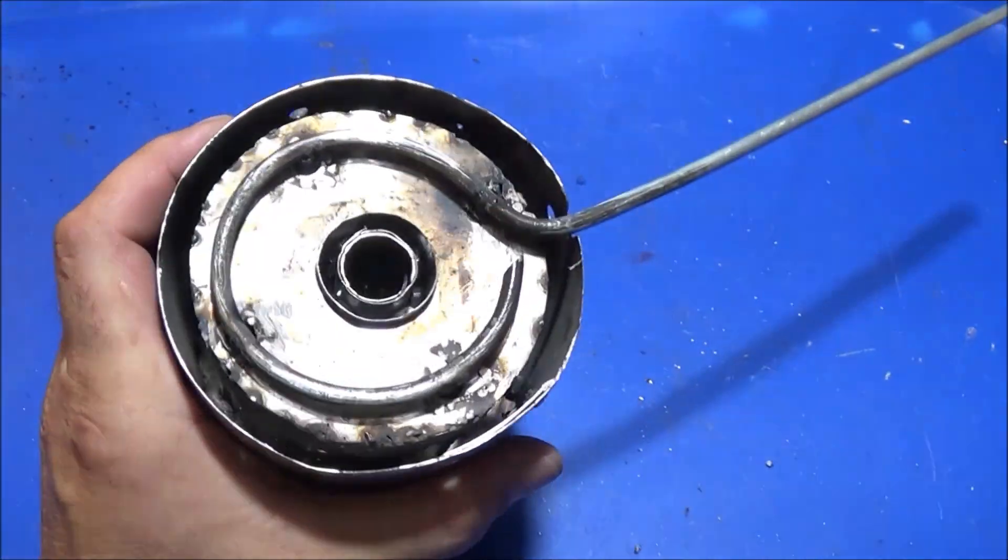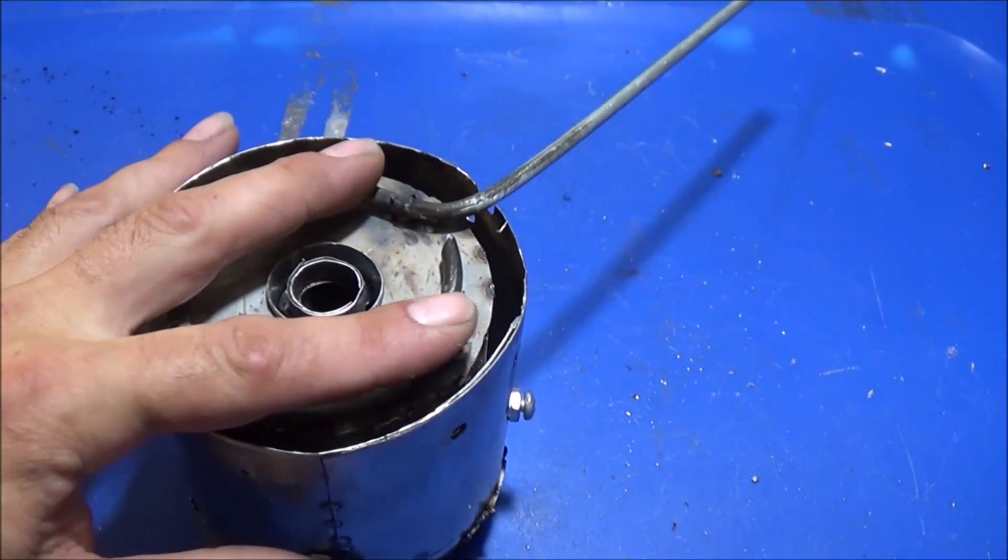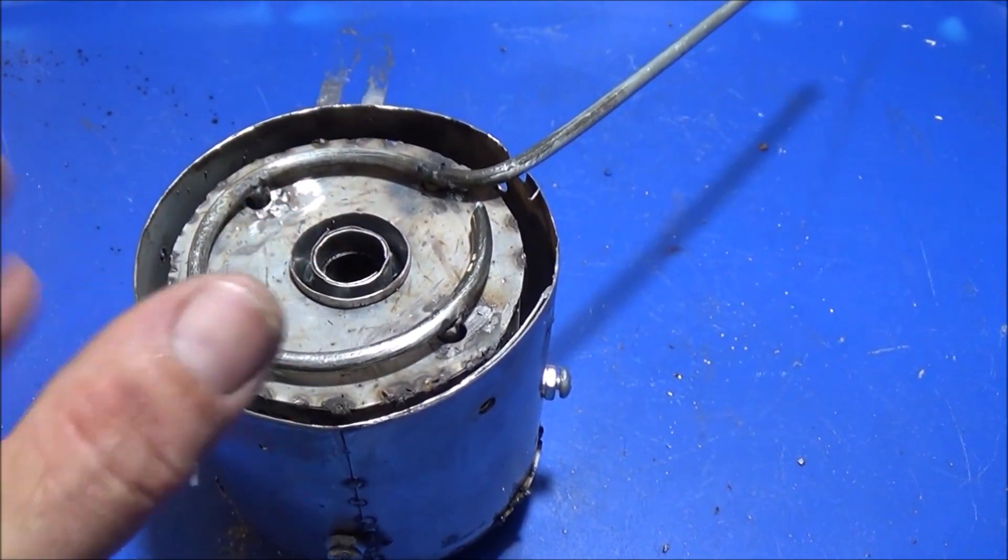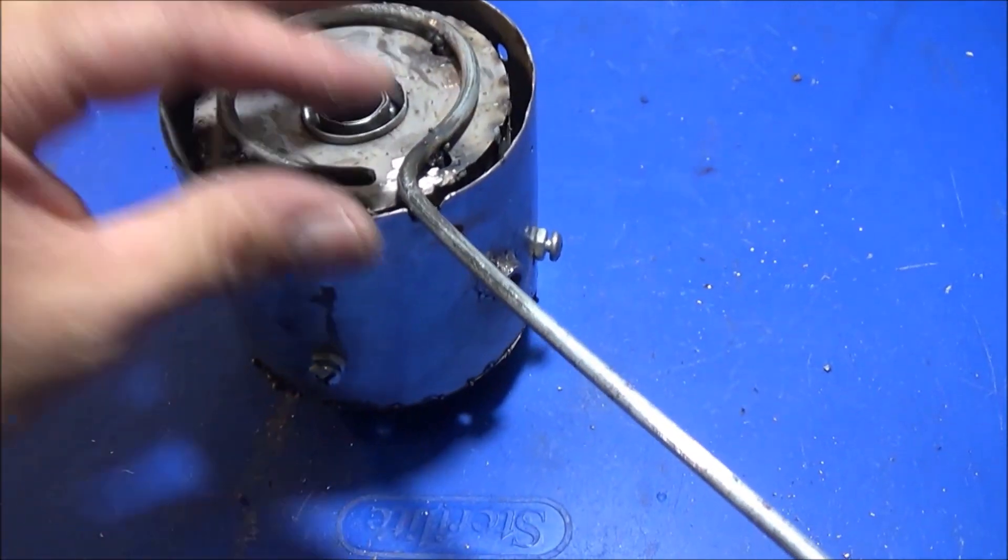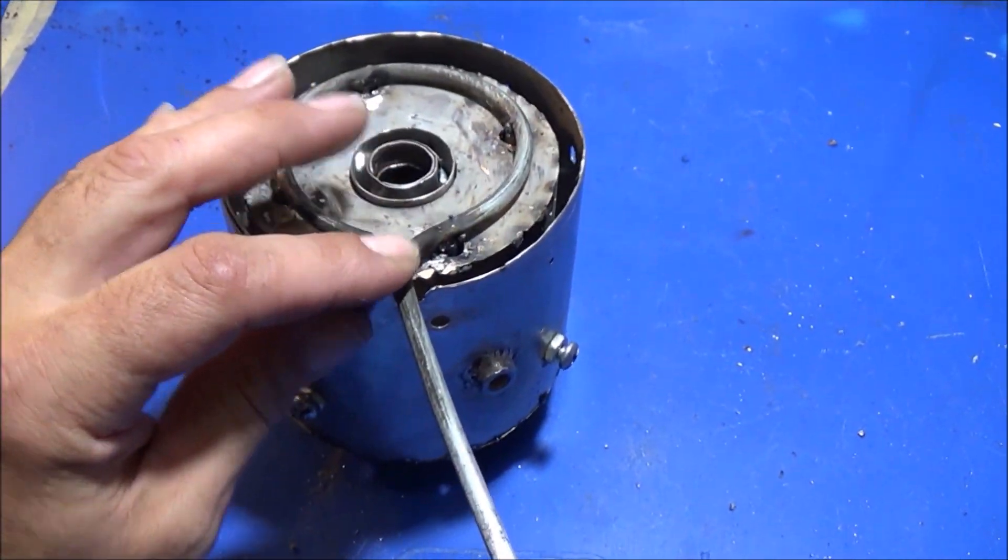Now we have our fuel line, our fuel atomizers, and our fuel delivery tubes ready to go. Everything's installed. Got a little notch in the case for the fuel line to come out of the case when the lid sits down on there.